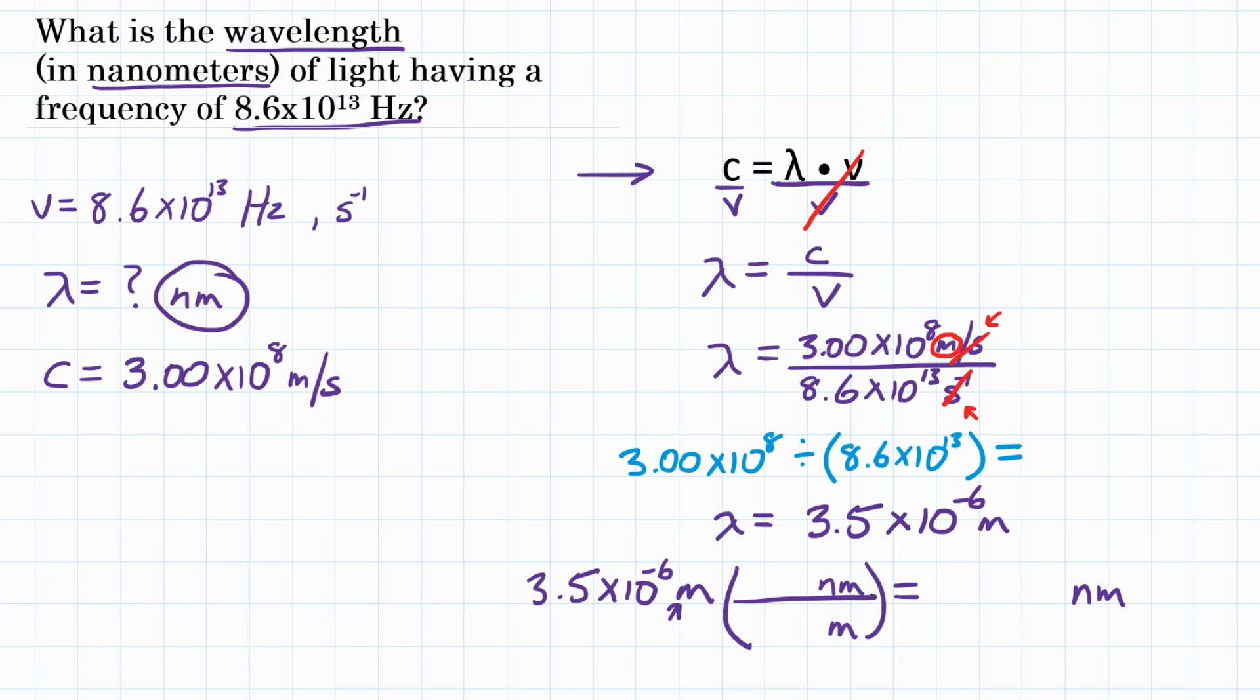So now I need to know the relationship between meters and nanometers. Well, one meter is 10 to the ninth, or also 1 billion nanometers. So now looking at my units, meters will cancel out, and I will be left with nanometers, which is what we want.